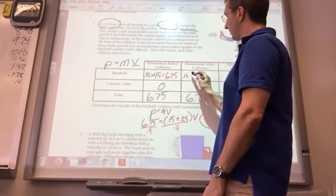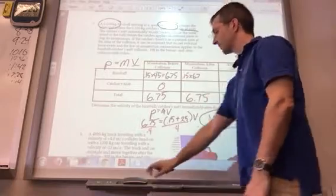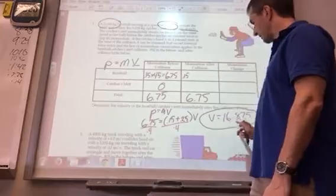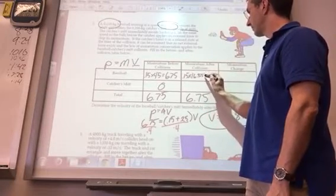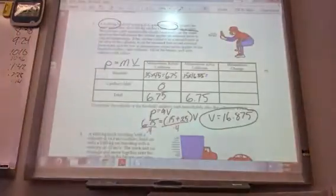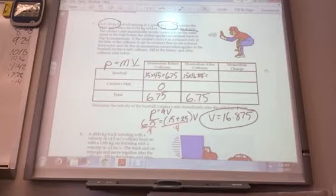I have to take the mass of 0.15, multiply that by the velocity here, 16.875, and I'm not that good with numbers. Pretty good with numbers but not so good that I can do that in my head.